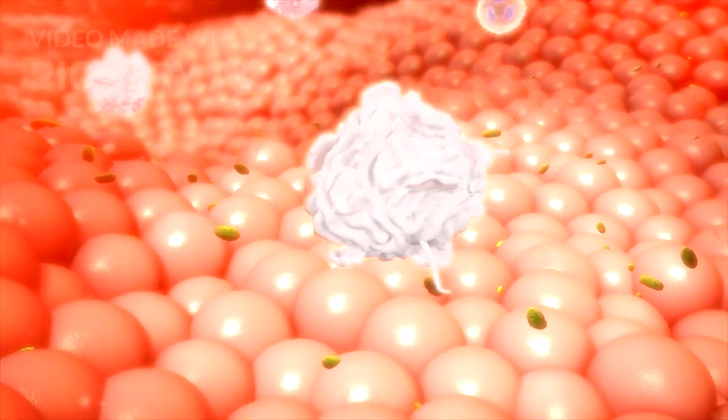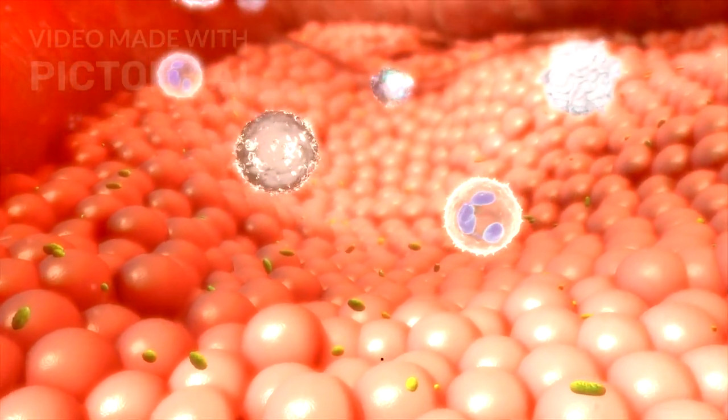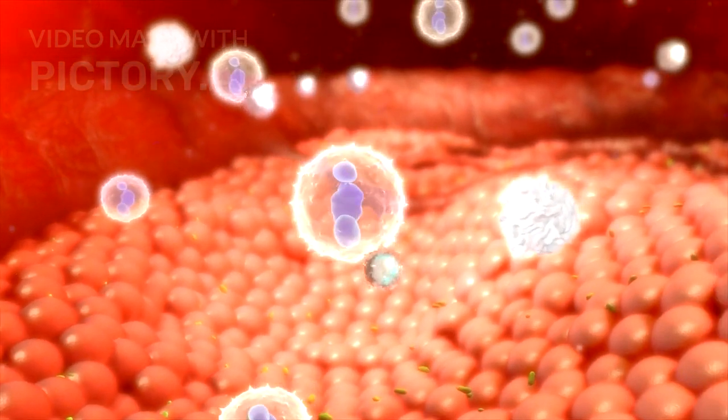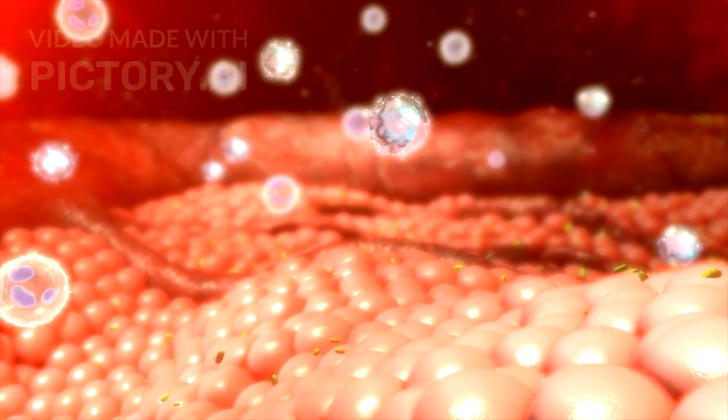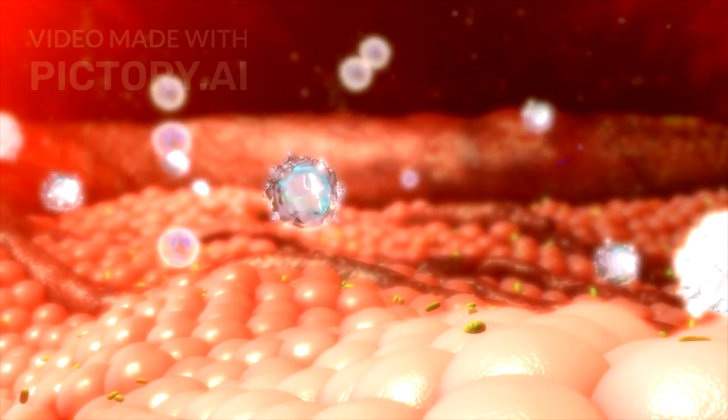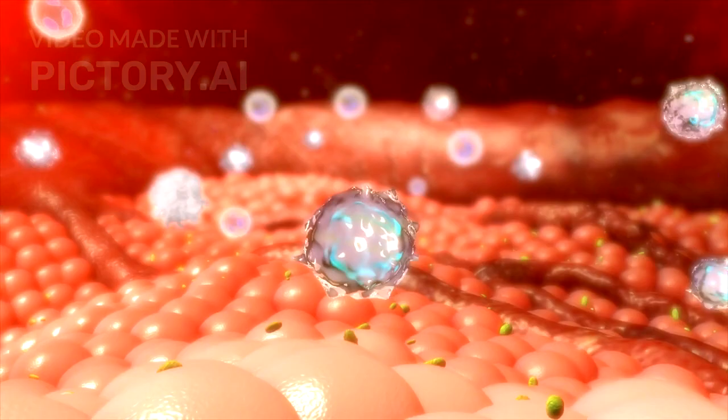White blood cells, or leukocytes, are crucial for the body's immune defense. Unlike RBCs, they have a nucleus and are fewer in number, constituting about 1% of the blood. They fight infections and foreign invaders. WBCs are classified into two major types.